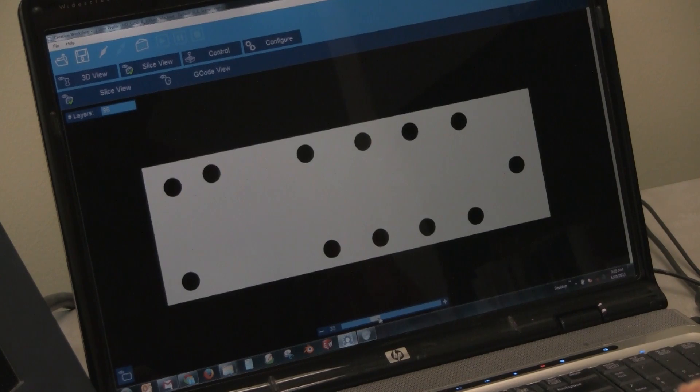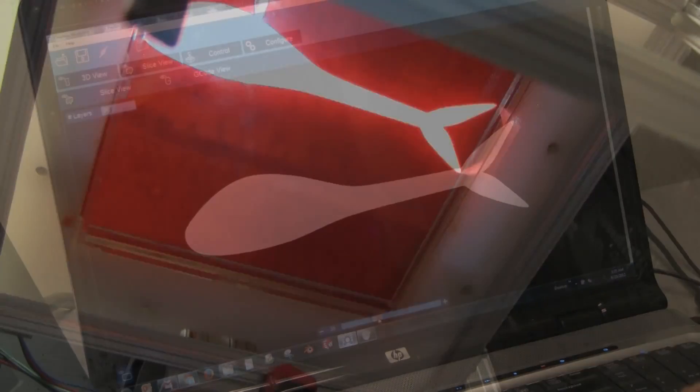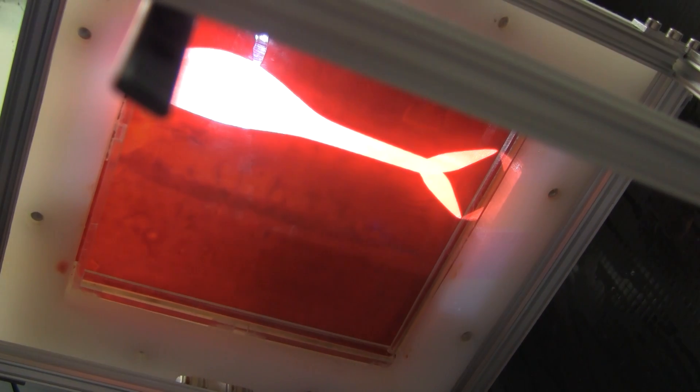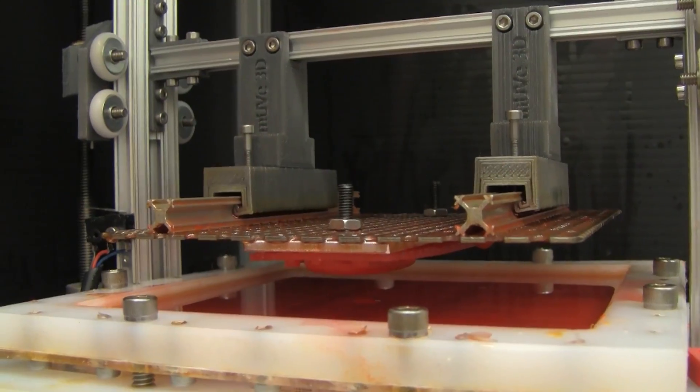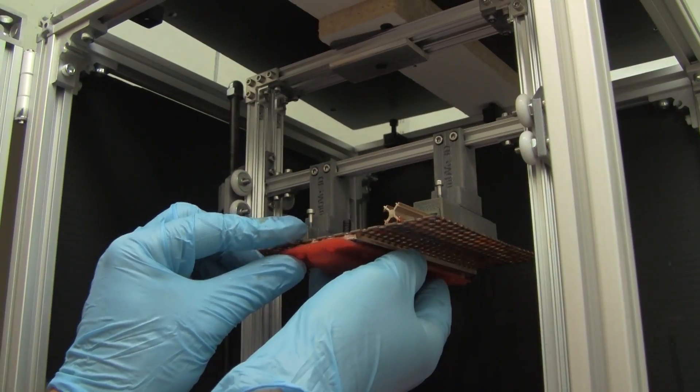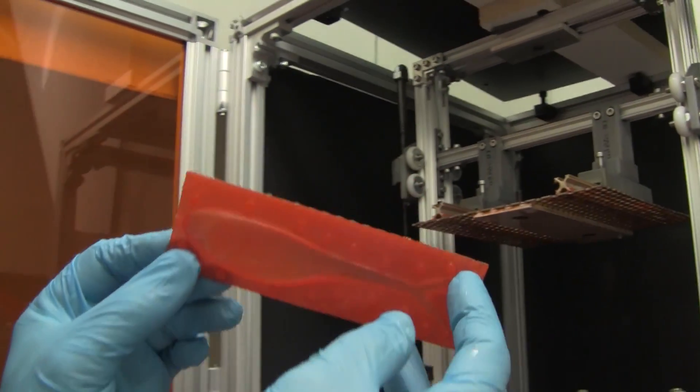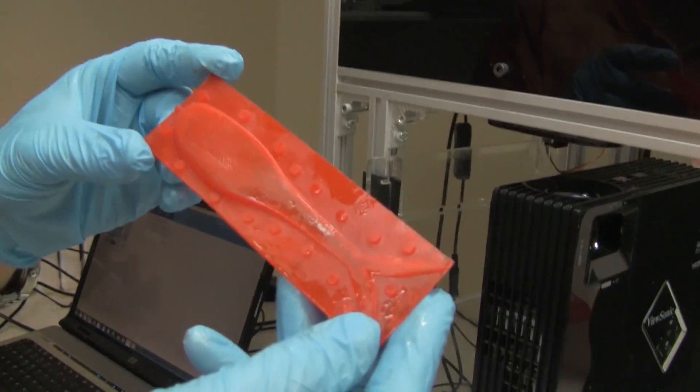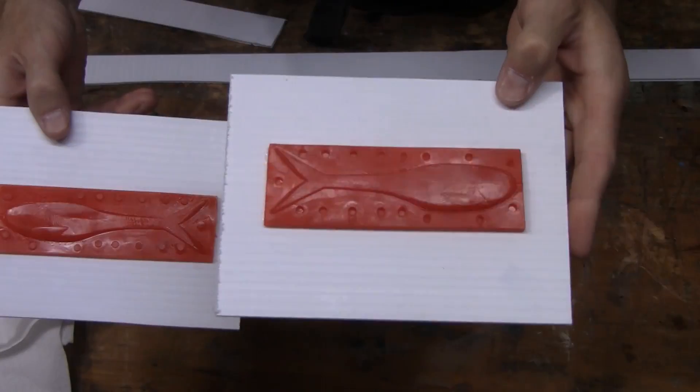Once we have the two halves with opposite locators designed into it, we're ready to 3D print. 3D printing is taking our SolidWorks file and printing it on an SLA machine, which stands for stereolithography. Basically, the stereolithography built up layer by layer until the entire part is printed.